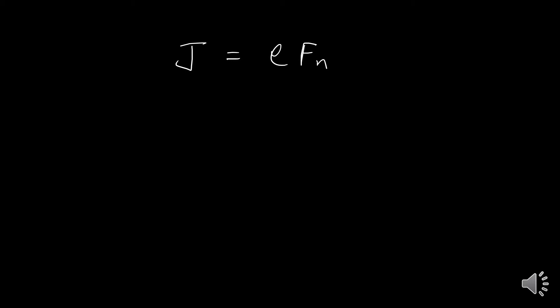The current density is J = −e·F_n. For electrons, this can be written as J_n = e·v_th·l·(dn/dx), substituting the value for F_n.